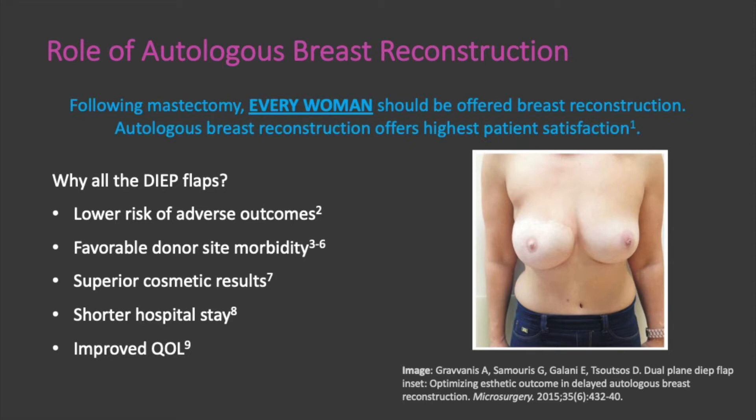The deep flap is the most appropriate surgical option for autologous breast reconstruction because it involves the use of cutaneous and subcutaneous tissues, sparing the muscle, as compared to the traditional myocutaneous, or muscle plus skin, technique. This means less morbidity at the donor site, less postoperative pain, and a shorter recovery time.